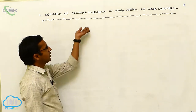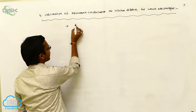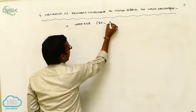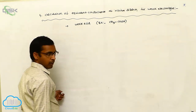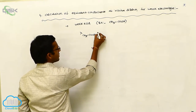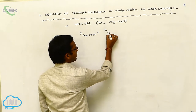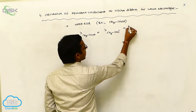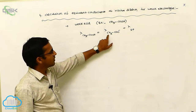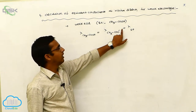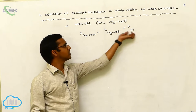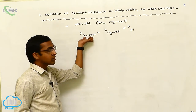By using Kohlrausch's law we can calculate that for weak electrolytes. Generally, the weak electrolyte example is a weak acid — that is, acetic acid. According to Kohlrausch's law, lambda infinity for acetic acid, CH3COOH, equals the equivalent conductance of the cation plus the equivalent conductance of the anion — that is, the acetate ion CH3COO minus and the proton H plus.